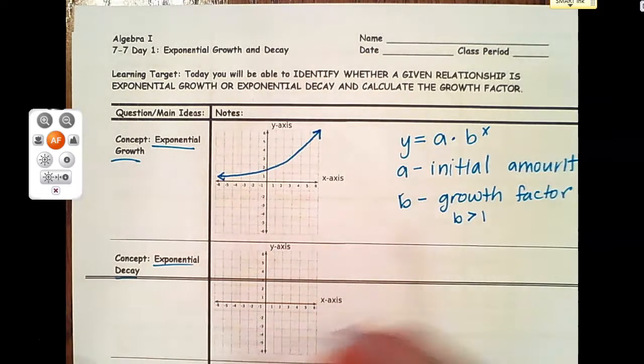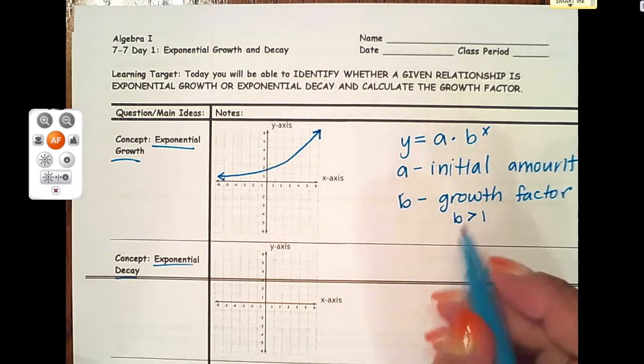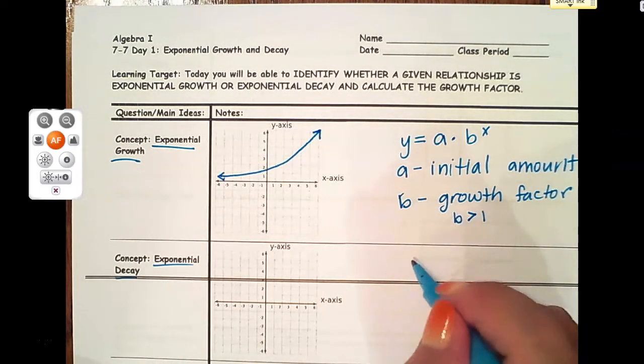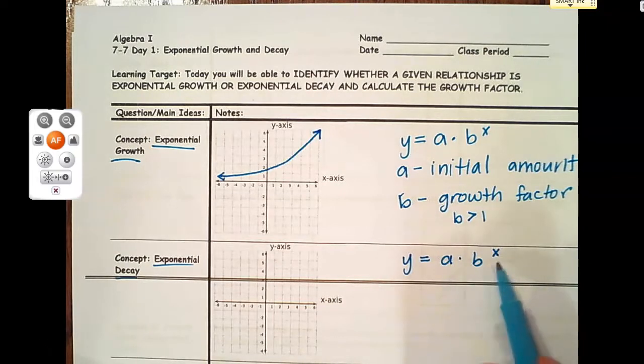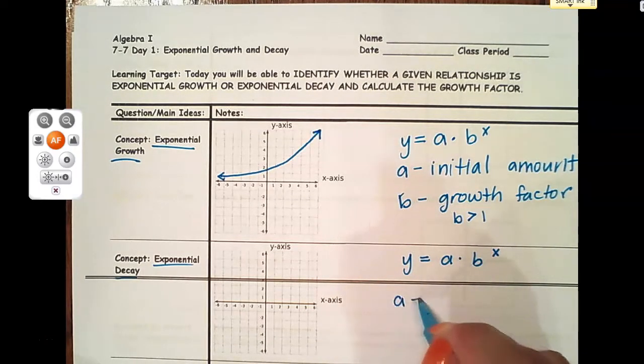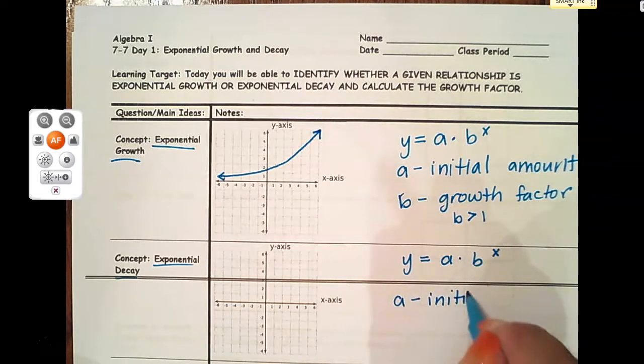When we have Exponential Decay - decay is another word for a gradual decrease - our exponential formula doesn't really change. We always have a variable as an exponent, so that's going to be the unknown thing in our equation.